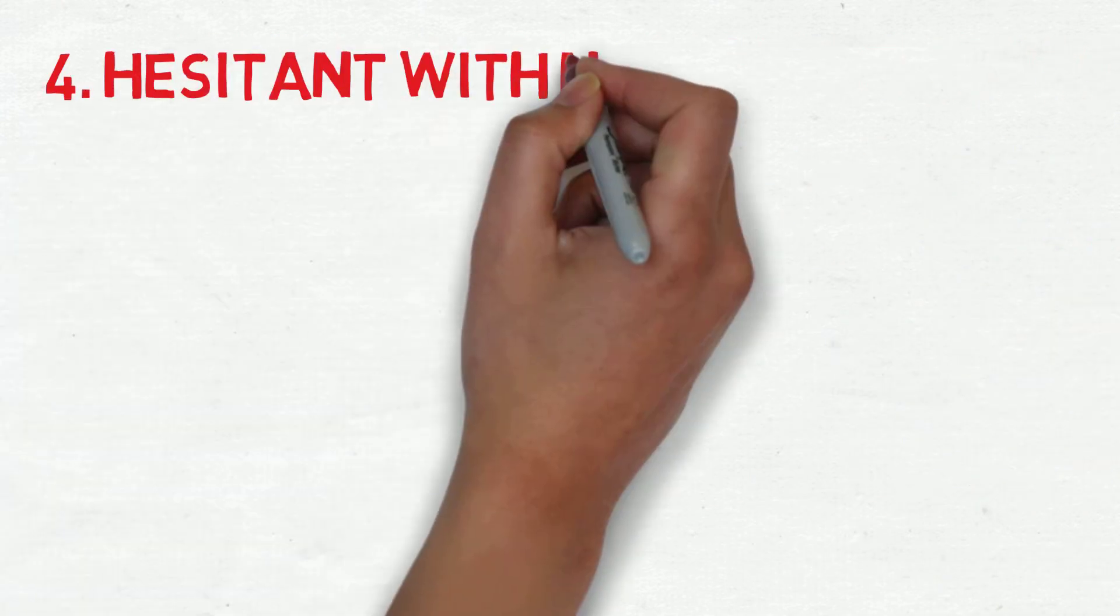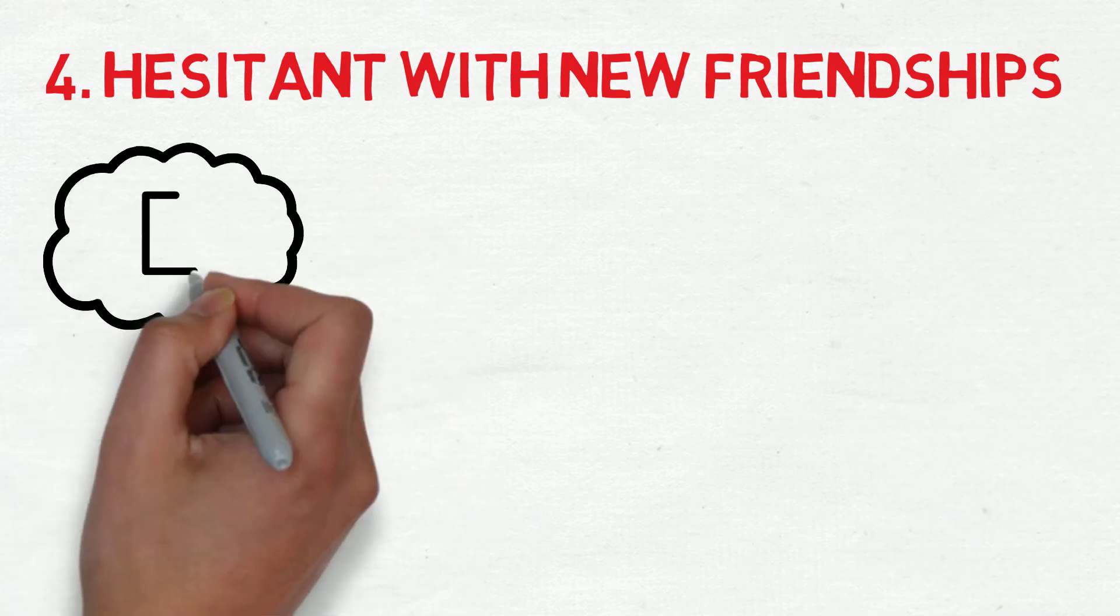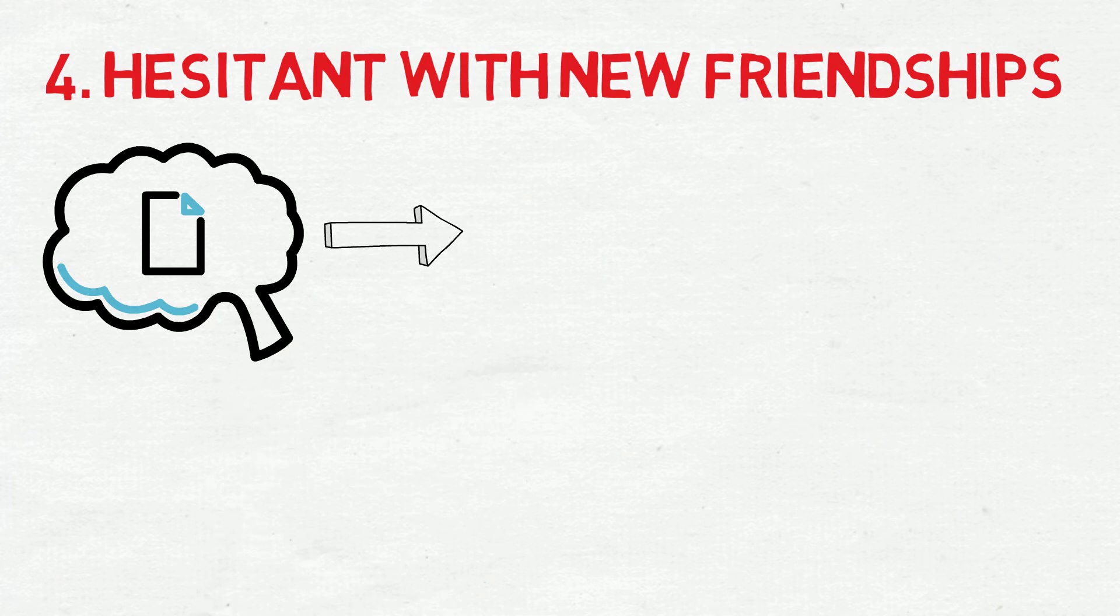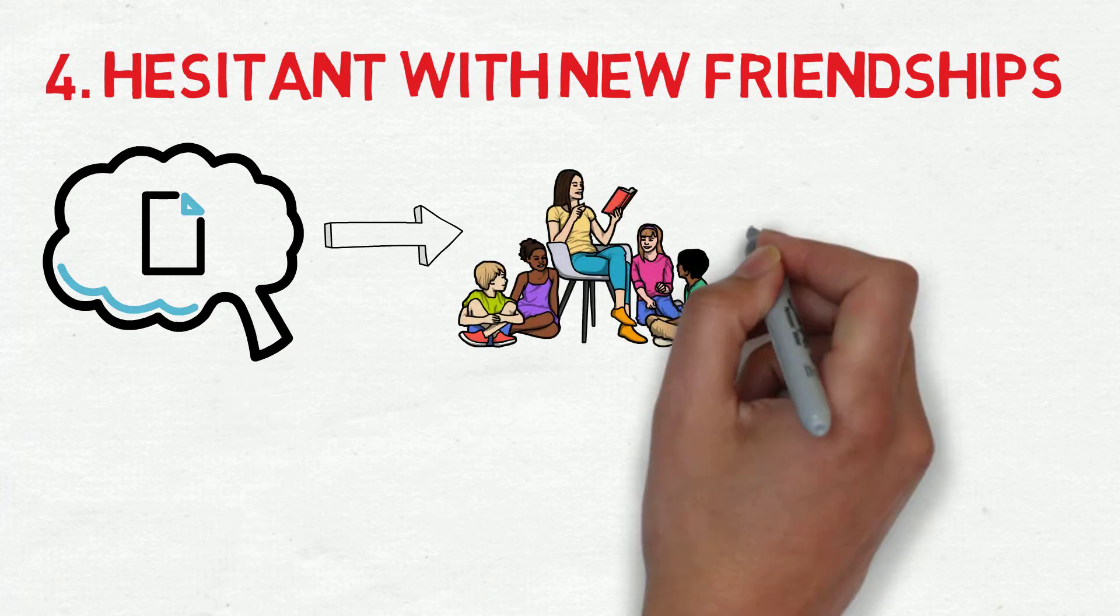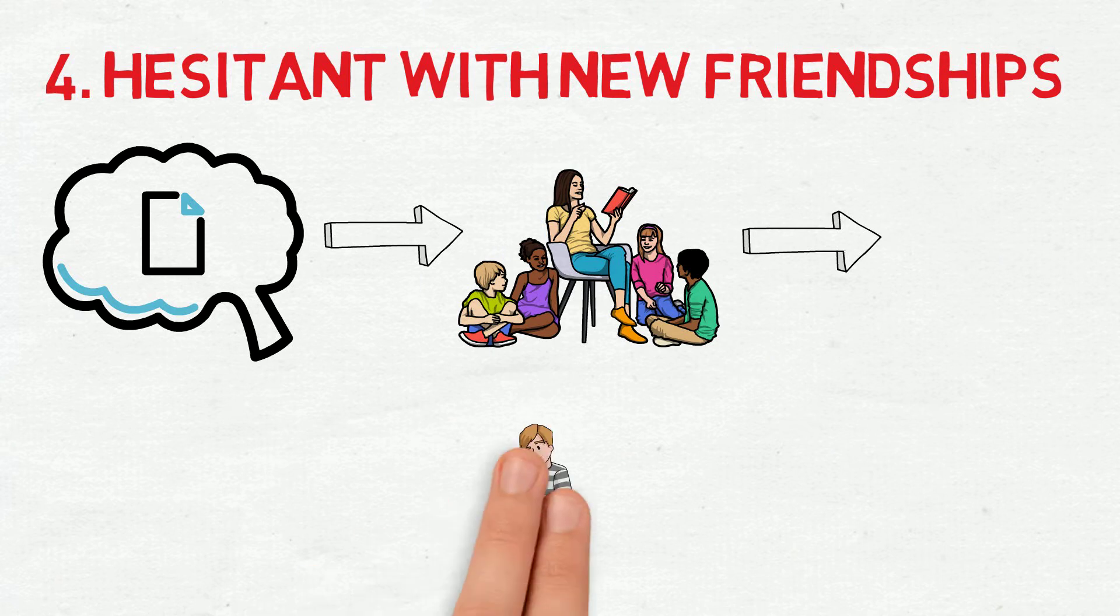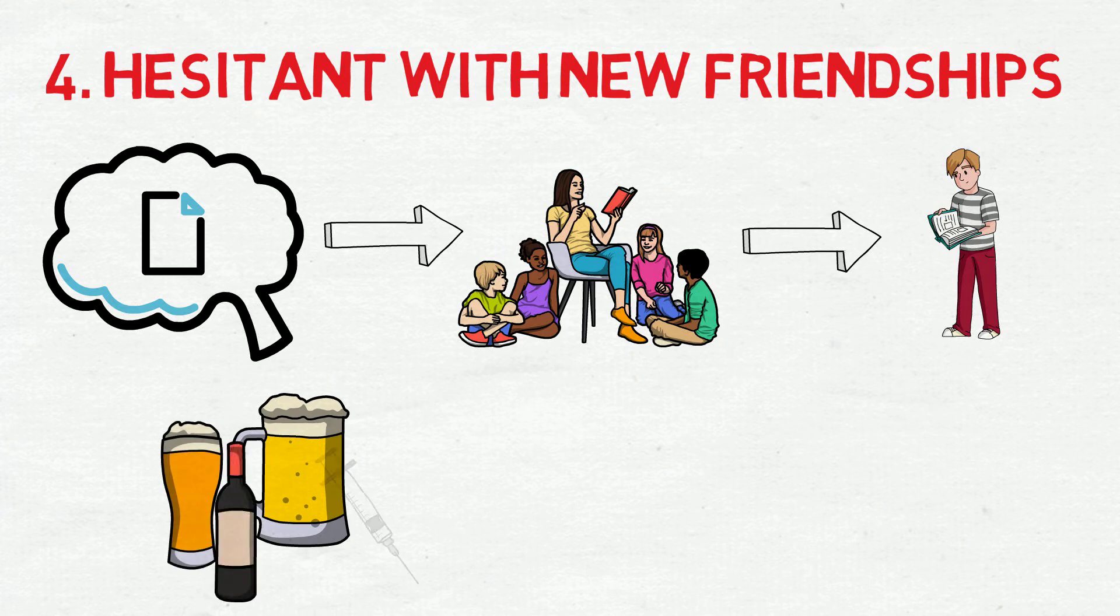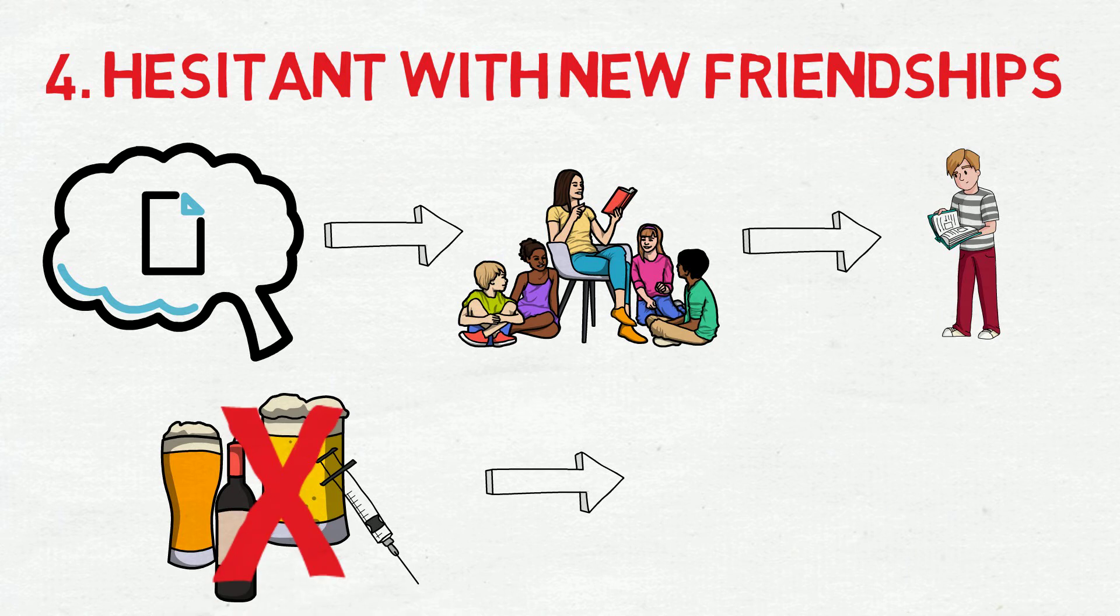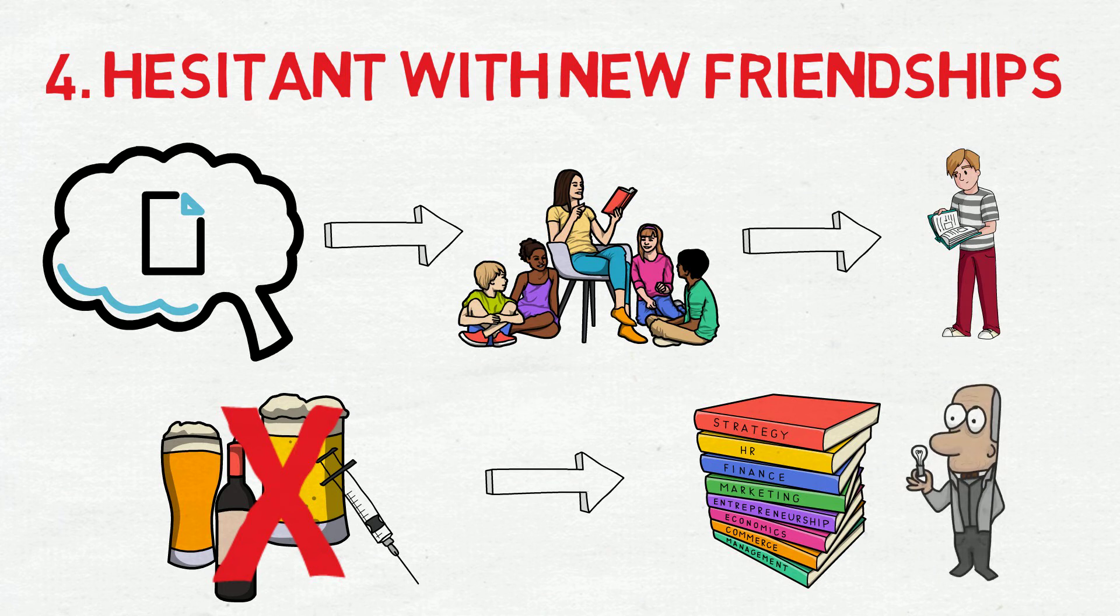Number four, they are hesitant with new friendships. Science has found that the brain has a group of neurons referred to as mirrors. As children, they help us shape the way that we replicate the actions that we see from the adults around us. Intelligent people seem to have figured out this fact, and that spending time with dumb people will lead to dumb behaviors and habits in themselves. Thus, they are picky with the people that they have around them, especially when adding new people.